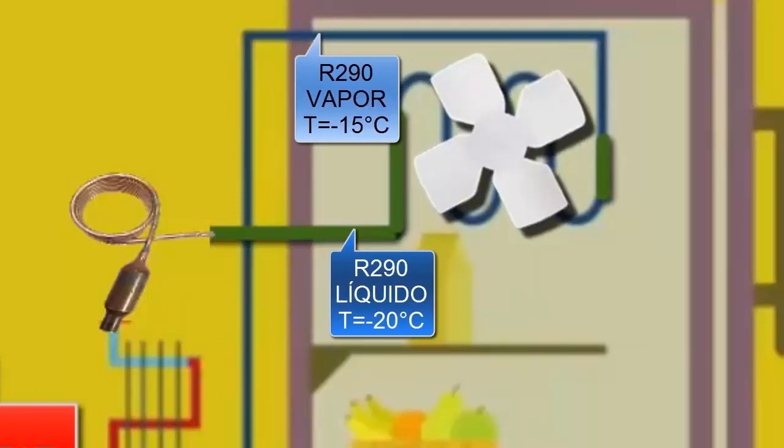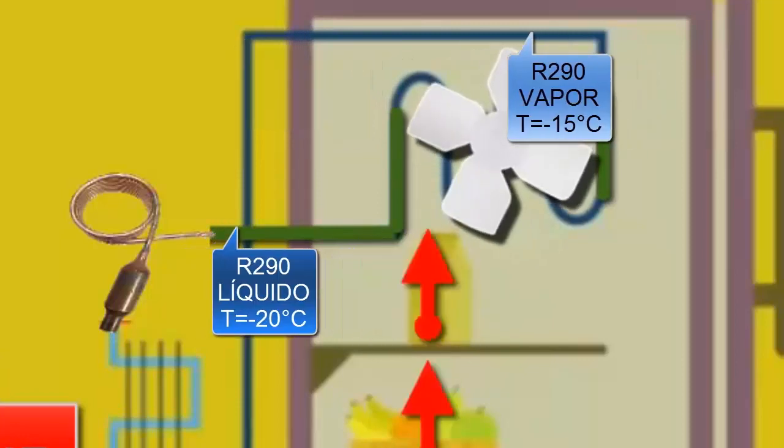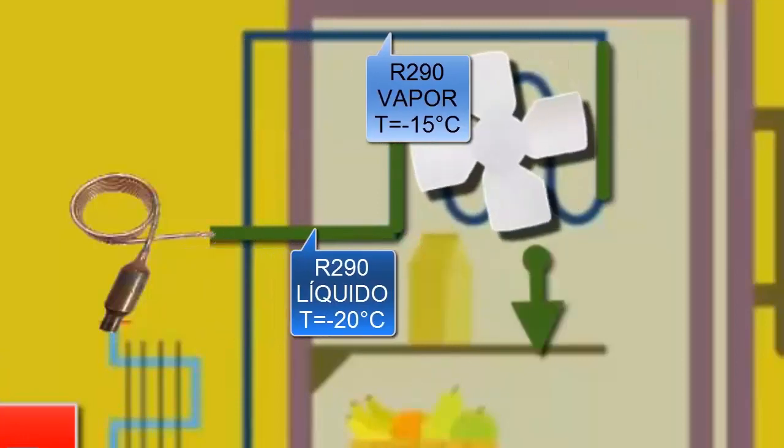The R290, now in a gaseous state with a slight temperature increase called superheating, is suctioned by the compressor.